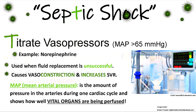T is for Titrate vasopressors to keep the mean arterial pressure greater than 65 mmHg. The first choice drug is norepinephrine. Vasopressors are used when fluid replacement is unsuccessful — if fluid replacement can't get the blood pressure up, vasopressors are added. Vasopressors cause major vasoconstriction, countering the vasodilation present in septic shock, and increase systemic vascular resistance. Keeping the MAP greater than 65 helps perfuse vital organs.